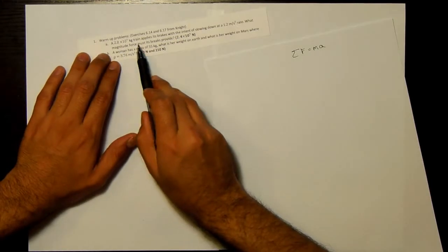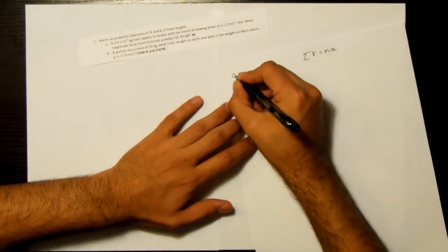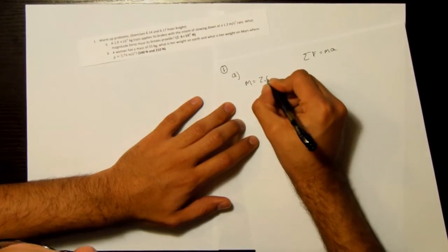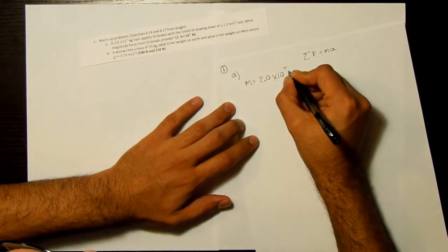we see that we have a train, we know the mass. The mass is 2.0×10^7 kilograms.